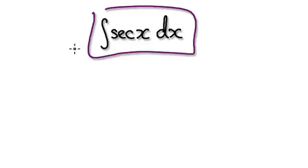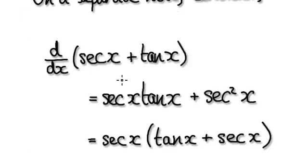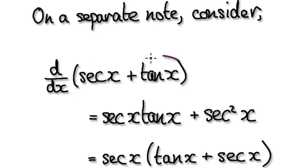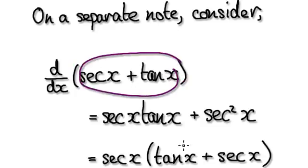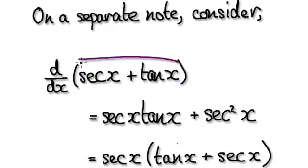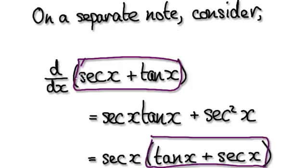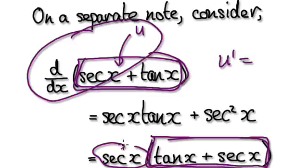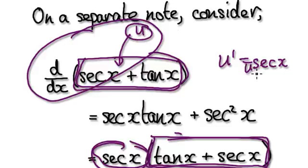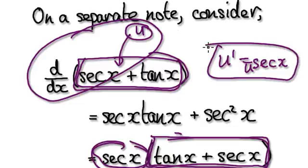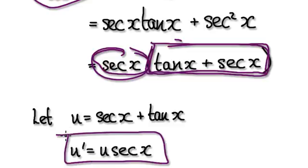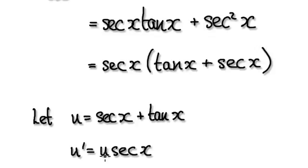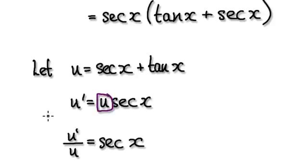We are trying to integrate sec(x), but on a separate note, let's consider this. If you differentiate this, it will give you this whole thing here. Notice that this part is exactly the same as this part. So when you differentiate this, it's something times by itself. Now if you let this thing here be u, then when you differentiate u, that's sec(x) times by u. So this thing here is exactly the same as sec(x)·u. Now divide both sides by u — that will give you that sec(x) is really this expression here.